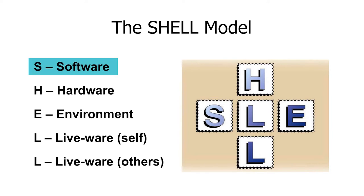First up, software. In aviation, this includes things like manuals, operating procedures, letters of agreements, checklists, and regulations. Imagine trying to assemble IKEA furniture without the instructions — you'd end up hugging that shark toy after mounting the chair and finding a few extra screws. Same deal here. When the software is clear and user-friendly, it helps our aviation heroes make fewer mistakes.